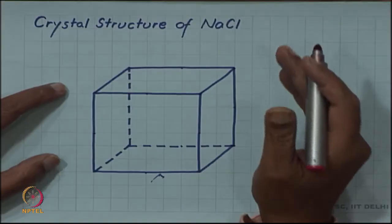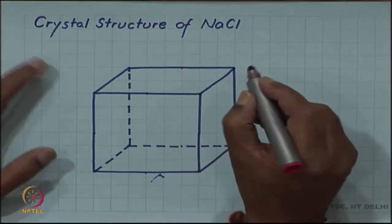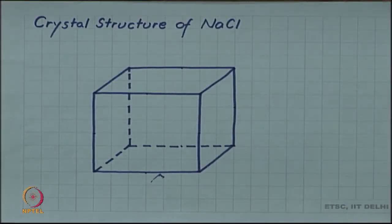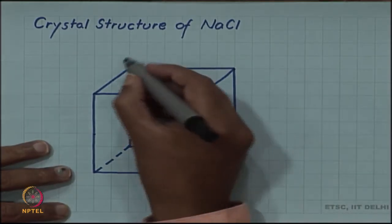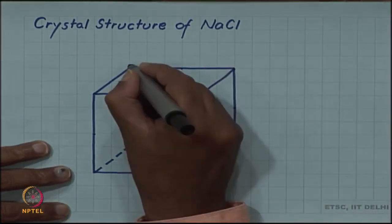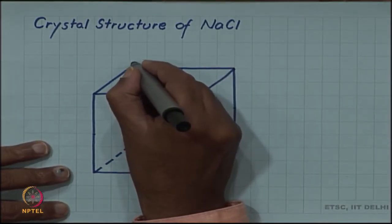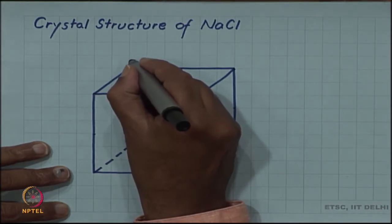When it was solved by Bragg, it was found that in the real crystal structure, chloride ions form the so-called face centered cubic sites.